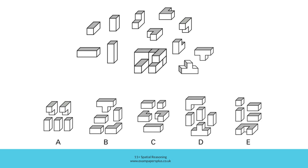It means that option B was indeed the right answer here. In B, the blocks could be put together to create the figure. This is a T-shaped block. This is an L-shaped block. This block, this one, and this one are therefore cuboids all in the same orientation. This means that B is the correct answer here.